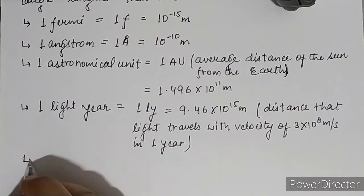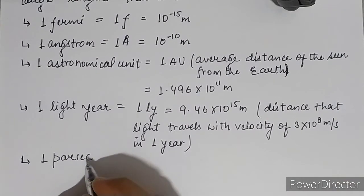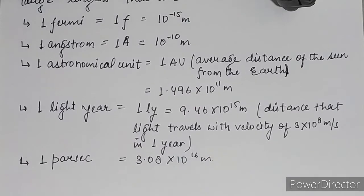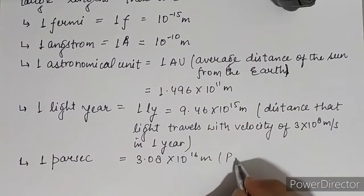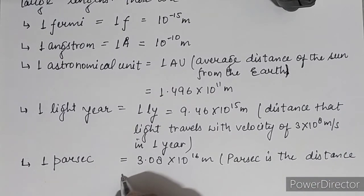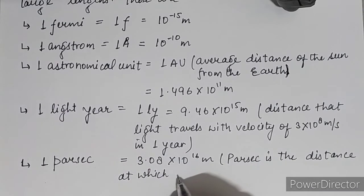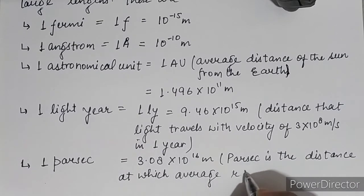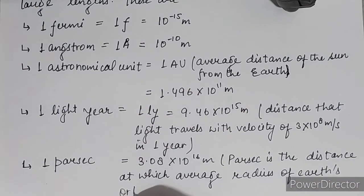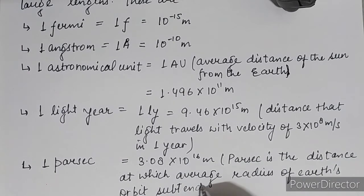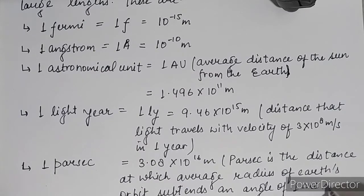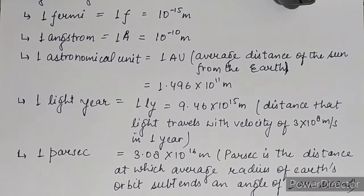Next one is parsec. One parsec has the value 3.08 × 10 to the power 16 meters, which is greater than the light year. Parsec is defined as the distance at which the average radius of the Earth's orbit subtends an angle of one arc second.